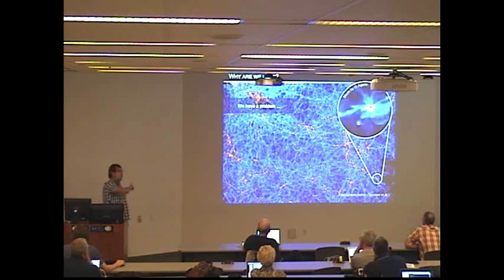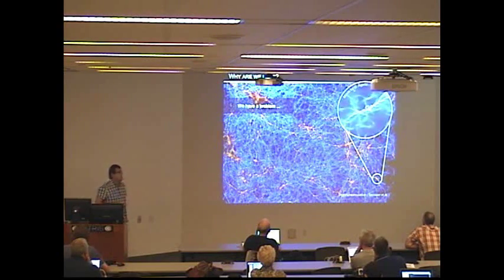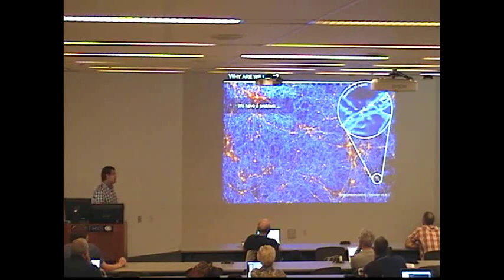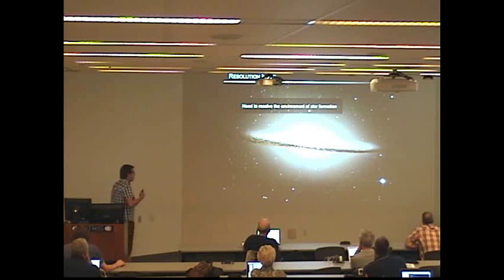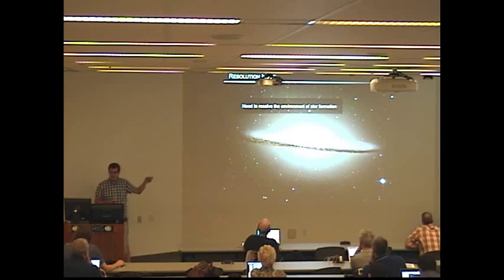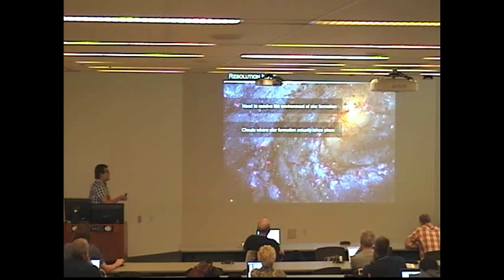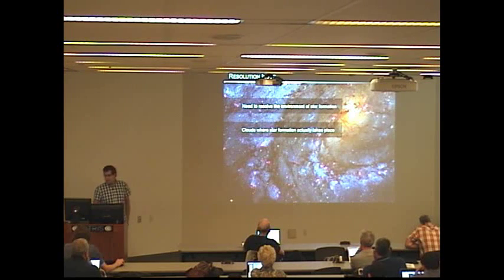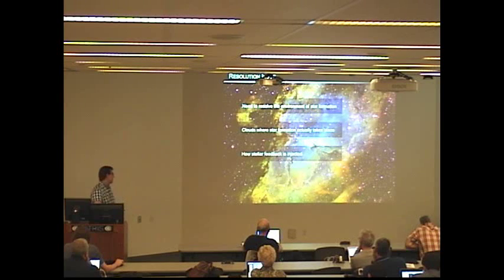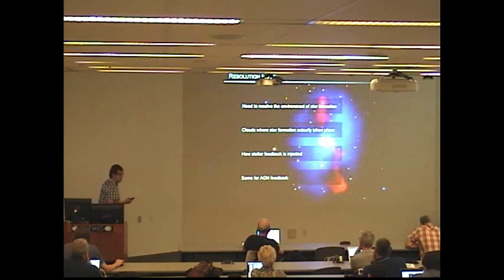But the problem is that in these simulations or their equivalent from other groups, we don't resolve galaxies. We don't resolve the environment where star formation is taking place. It's not enough to have a few cells or a few particles per the scale height, so 100-ish parsec. We don't resolve the clouds where star formation takes place. So we don't know how stellar feedback is injected. The structure of the interstellar medium. And we have the same problem about the AGN feedback.